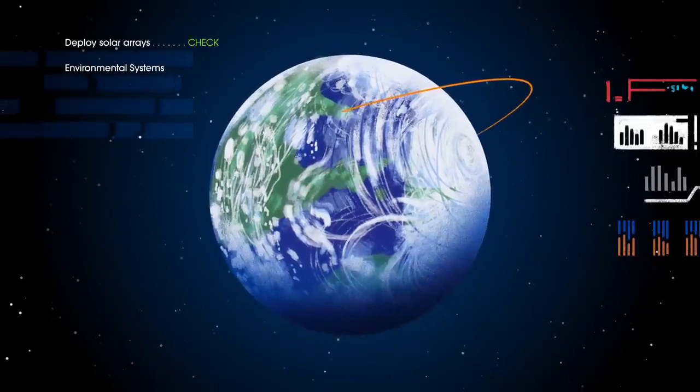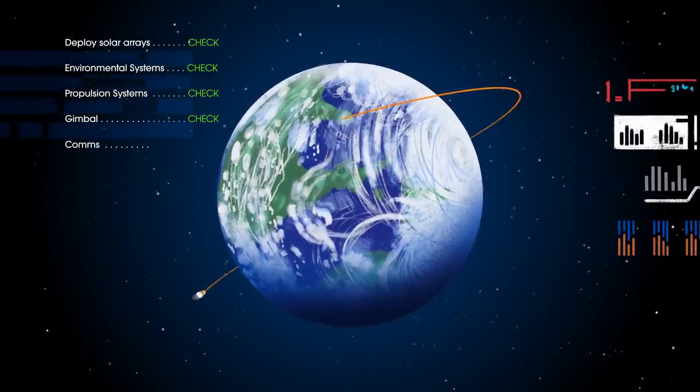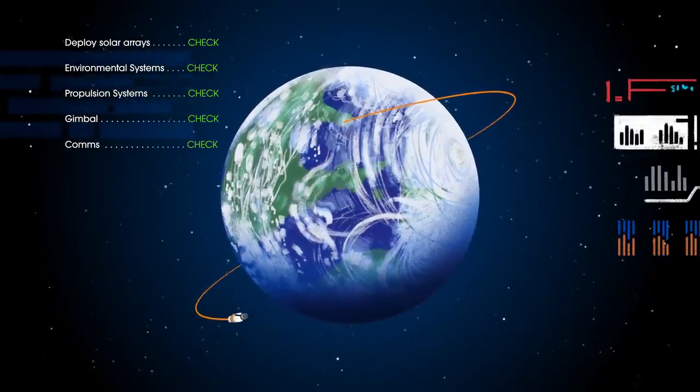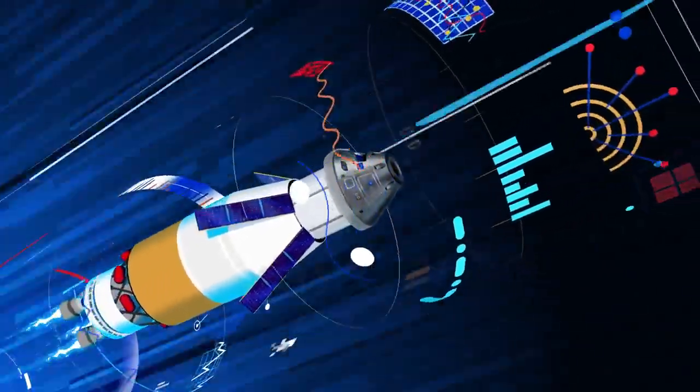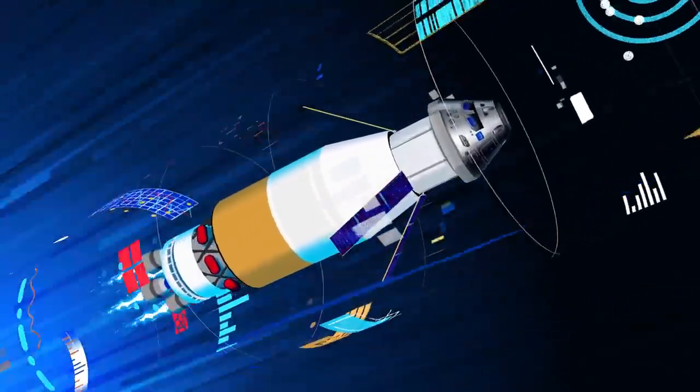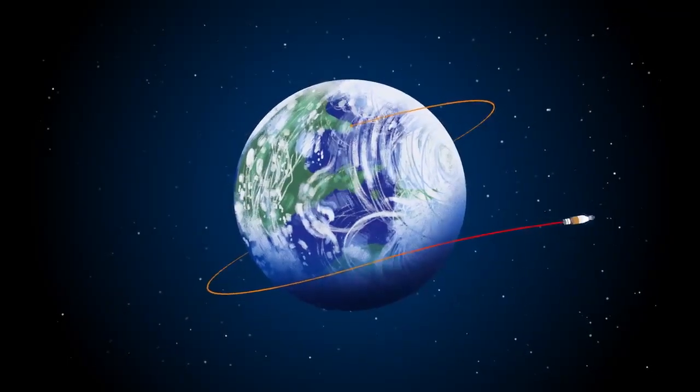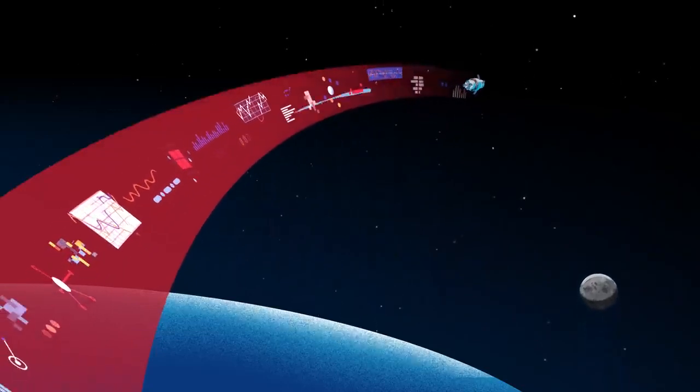Here, the crew reconfigure the spacecraft and check systems to confirm everything is ready for deep space travel. With a go from mission control, the crew reignite the exploration upper stage engines to leave Earth entirely. The exact timing of this maneuver is critical to reach a speed that can escape Earth's gravitational pull, but also put Orion on a course that will intersect the Moon days later.